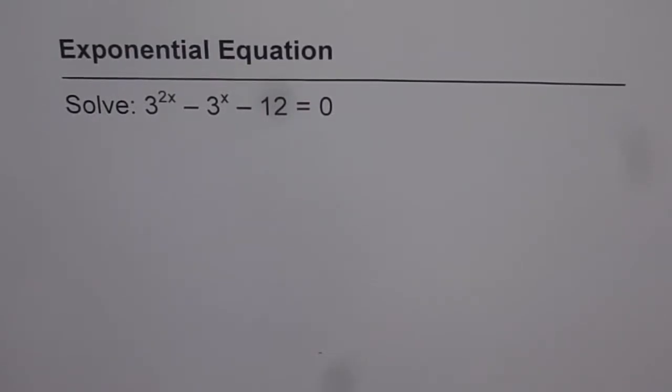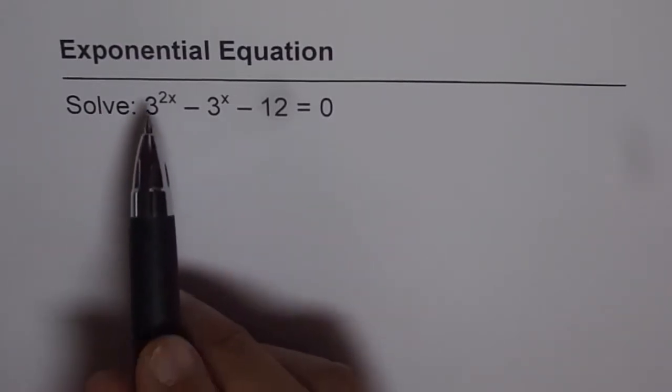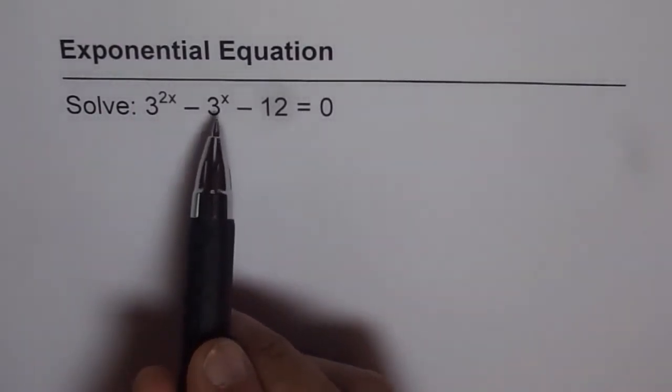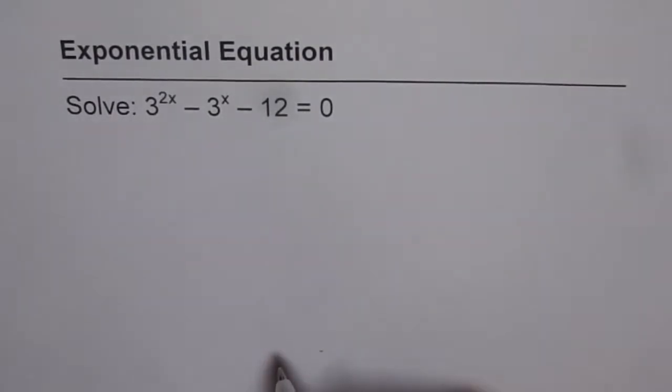Let us try to solve an exponential equation in quadratic form. The equation given to us is 3 to the power of 2x minus 3 to the power of x minus 12 equals 0.